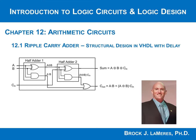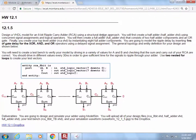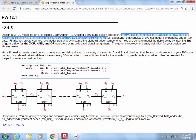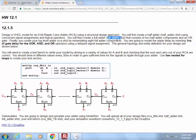Design a VHDL model for an 8-bit ripple carry adder using a structural design approach. You will first create a half adder, which is going to be called half_adder.vhd. Then you're going to combine those into another system called a full adder — two half adders and an OR gate. Then you'll put eight full adders together and create an 8-bit adder.